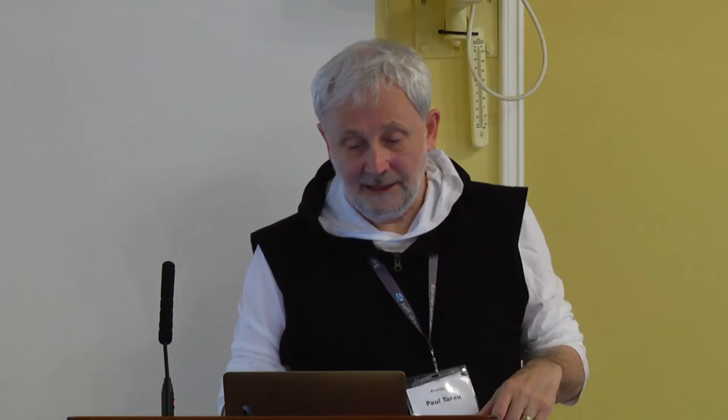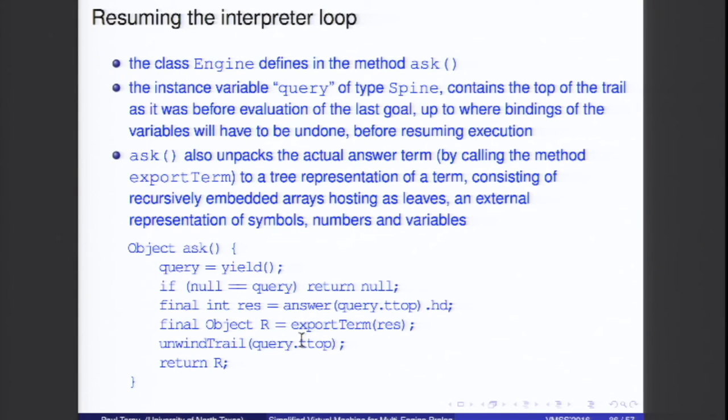From the outside, the 'ask' method initializes a query via yield, checks for null (no answers), builds an answer in external representation using export_term, unwinds the trail, and returns the result. Each call to ask triggers one yield step, enabling one-answer-at-a-time retrieval.